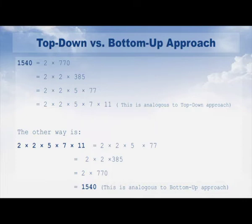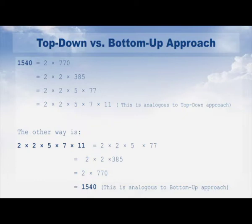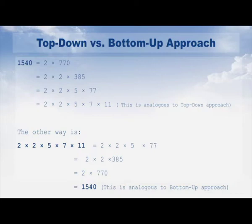The other way is to start from the building blocks, i.e., the prime numbers: 2 × 2 × 5 × 7 × 11. We first perform 7 × 11 to get 77, giving us 2 × 2 × 5 × 77. Then 5 × 77 gives 385, so we get 2 × 2 × 385. Then 2 × 385 gives 770, and finally 2 × 770 gives us 1540. This is analogous to the bottom-up approach, wherein we start from the prime factors and arrive at the composite number.